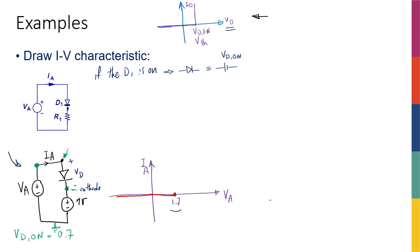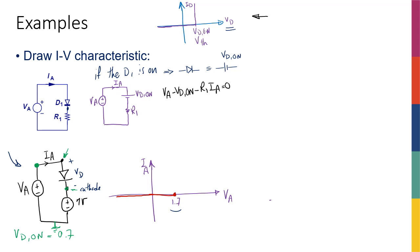So my circuit is going to look like this: I have Va, then instead of the diode a voltage source of Vd_on, then resistor R1. For this circuit I know the relationship between Ia and Va. Writing KVL: Va minus Vd_on minus R1 times Ia equals zero, therefore Ia equals (Va minus Vd_on) divided by R1.